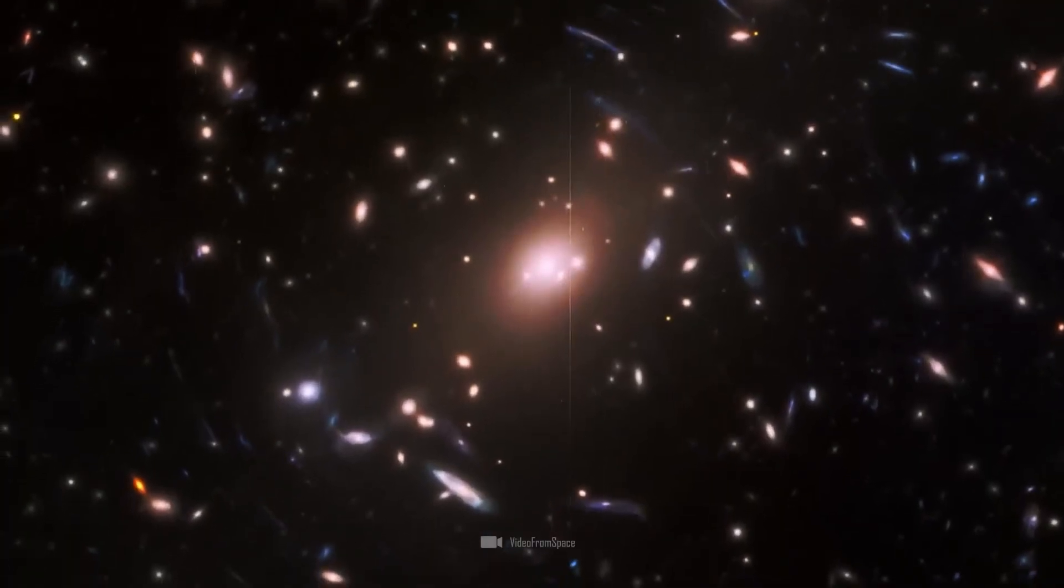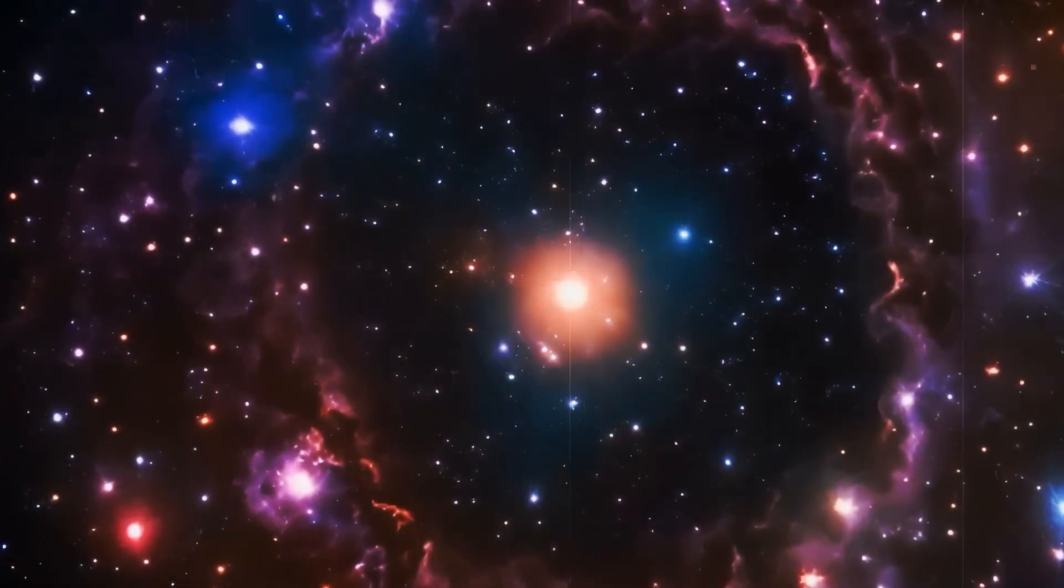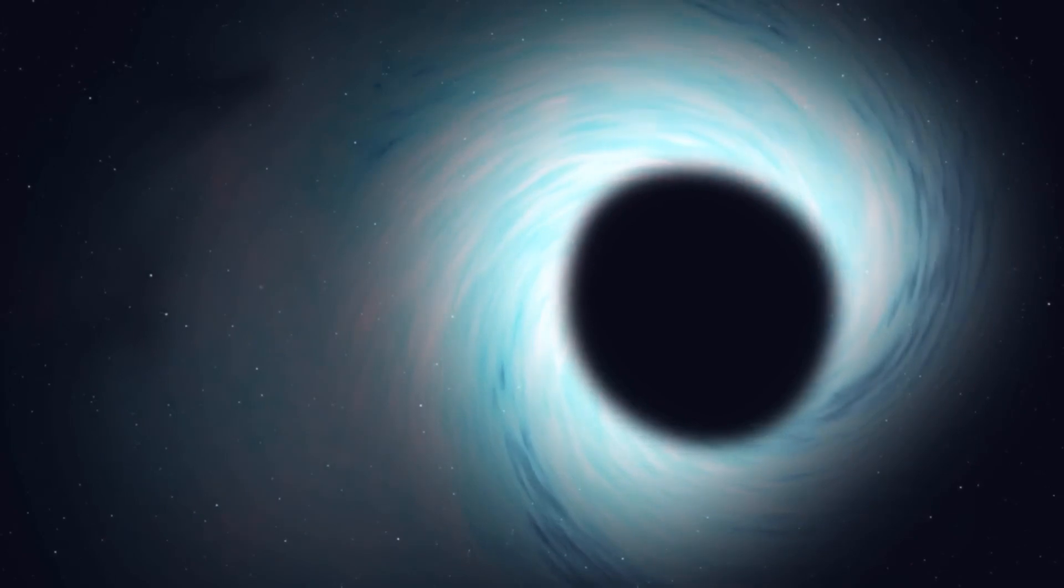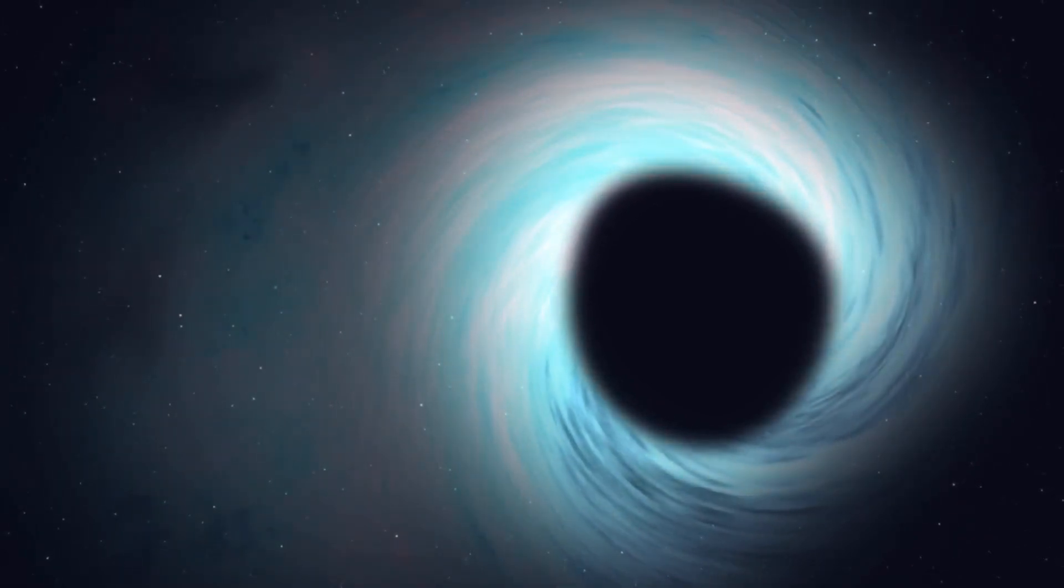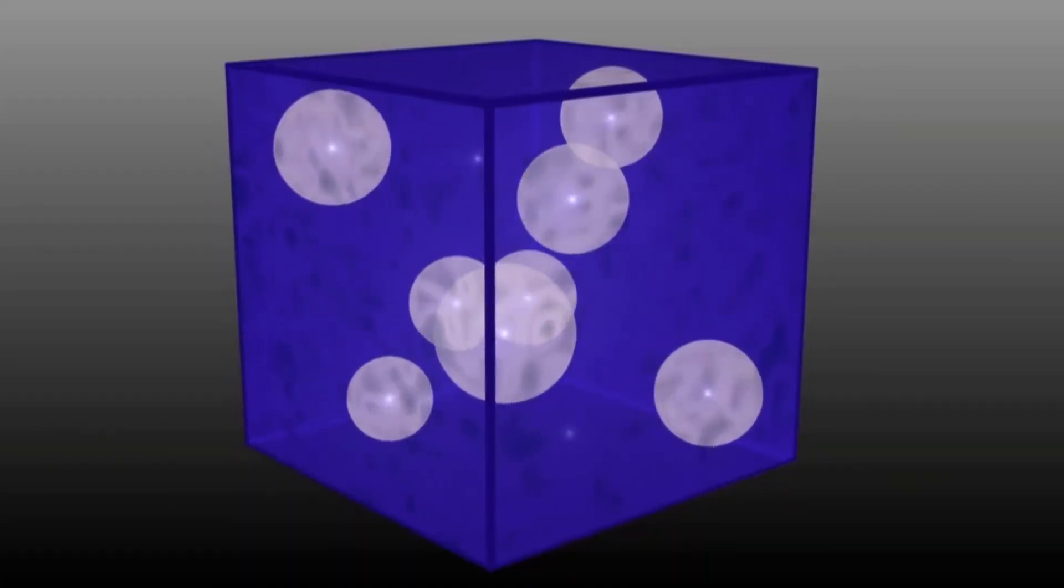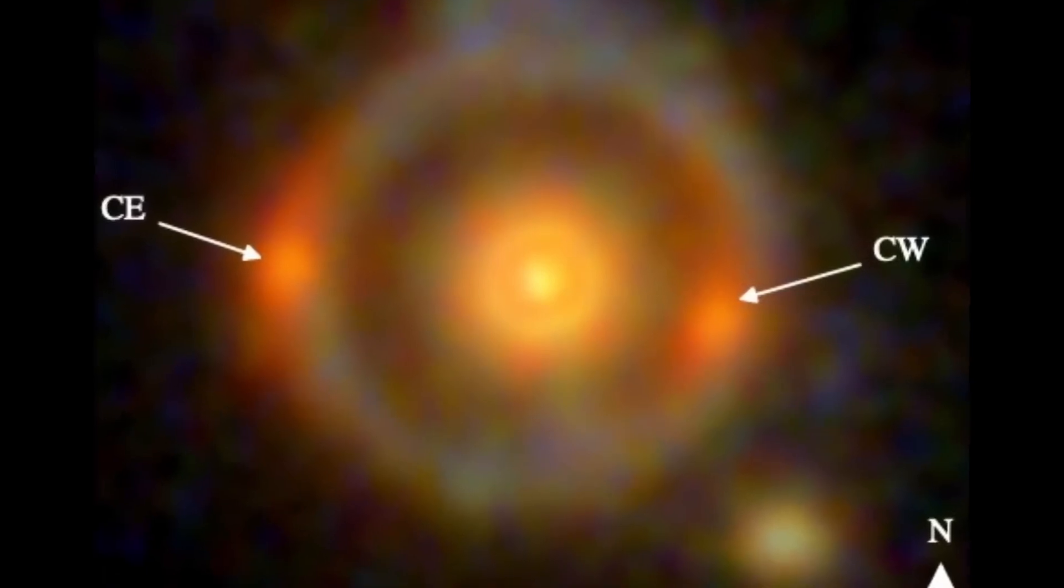So this suggests that the singularity is not the point from which everything came, but rather an infinite place where everything everywhere came into existence about 13.8 billion years ago. But wait, what I've said so far perfectly explains the mysterious nature of our universe, but new discoveries from the Webb Telescope are challenging the estimated age of our universe. Because each deep field image from the James Webb Telescope reveals unexpected things that force us to rethink the Big Bang model of the 13.8 billion year old universe.